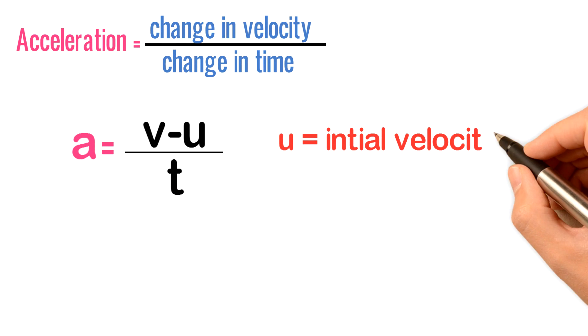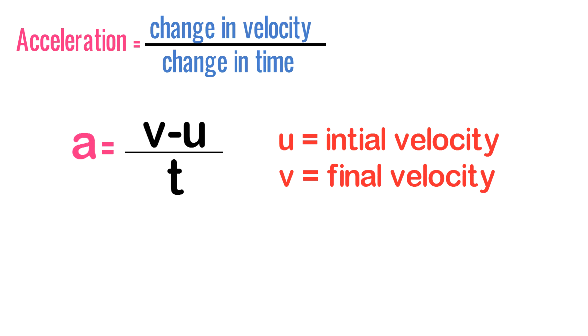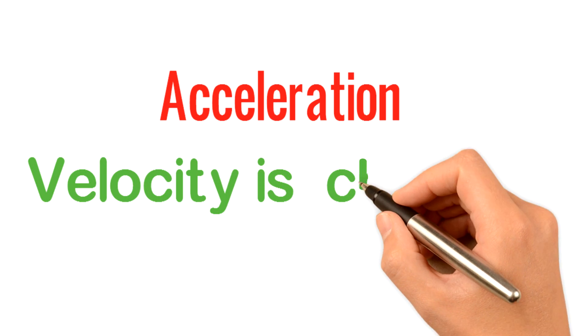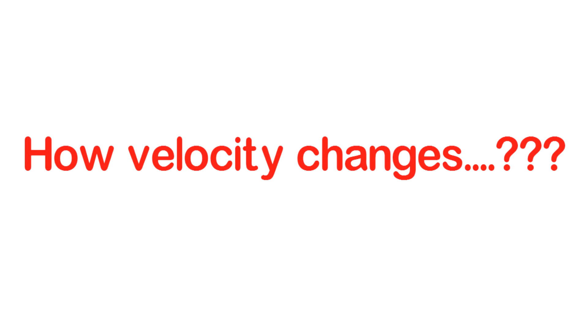Here, U is the initial velocity of the body and V is the final velocity of the body. Remember, whenever I say acceleration it means velocity is changing. I am repeating this statement: whenever I am saying acceleration, it will mean velocity is changing. Now if someone asks me how velocity changes...